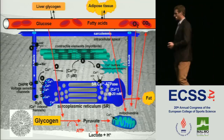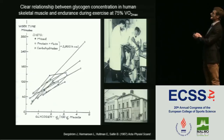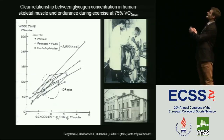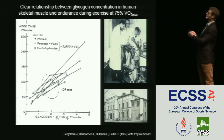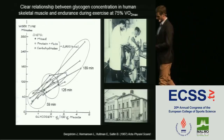One of the most well-known studies on glycogen was done by the group of Bergström, Hermansen, Hultmann, and Saltin. They showed that on a mixed diet, with an intermediate amount of glycogen, you can exercise at 75% of VO2 max for around two hours before exhaustion. On a high protein and fat diet with no carbohydrate, you can only exercise for one hour, whereas with a carbohydrate-rich diet giving high muscle glycogen, you can exercise for three hours. This has been shown numerous times since then.